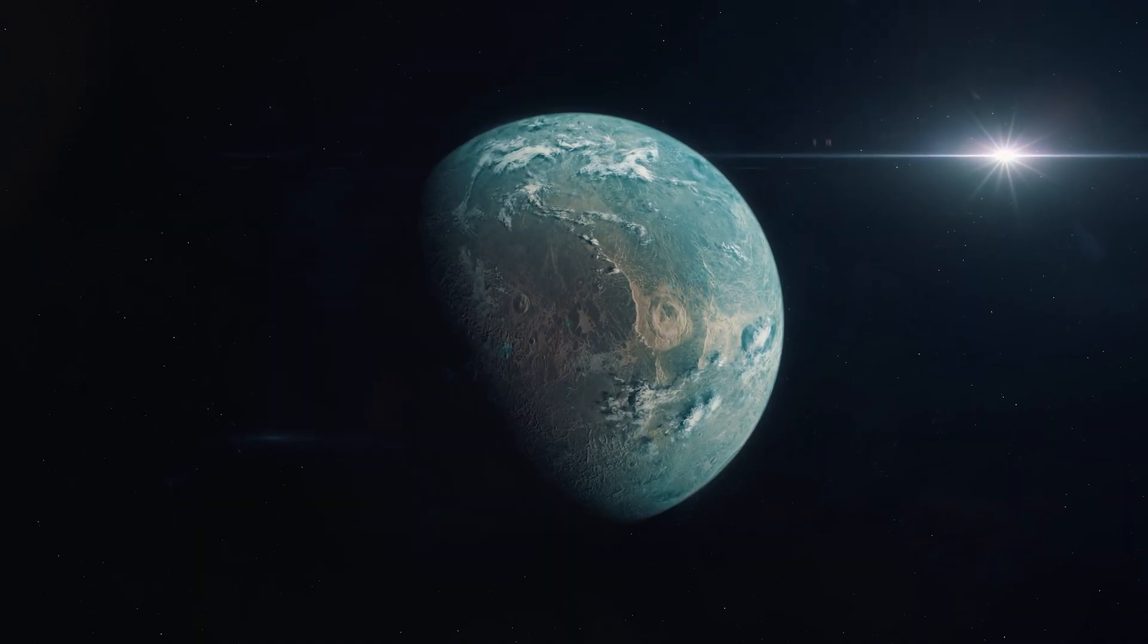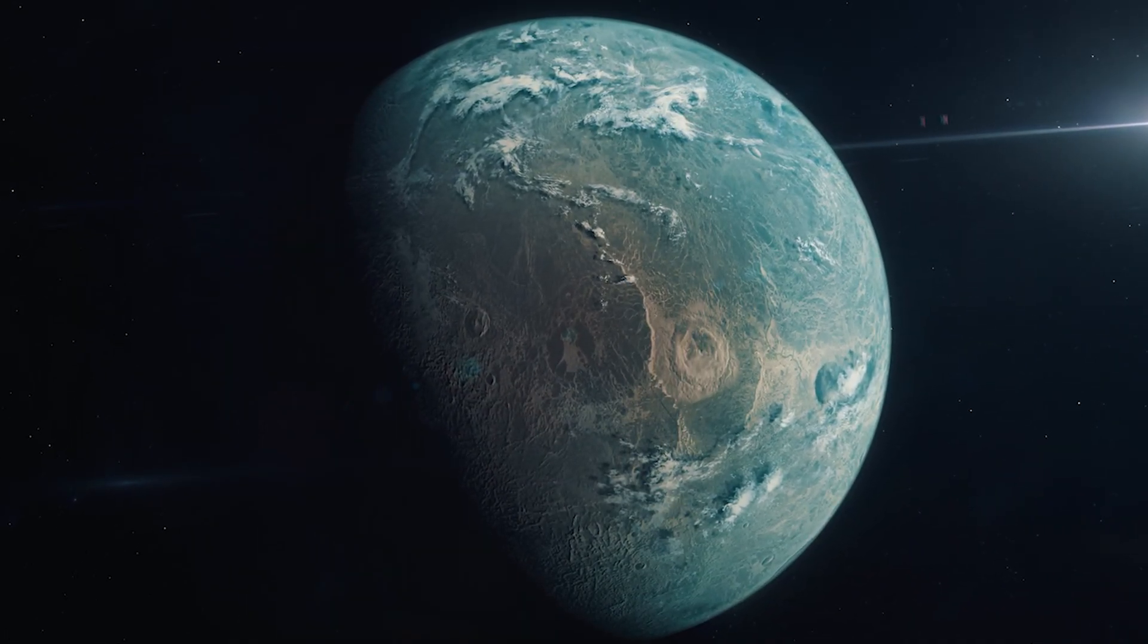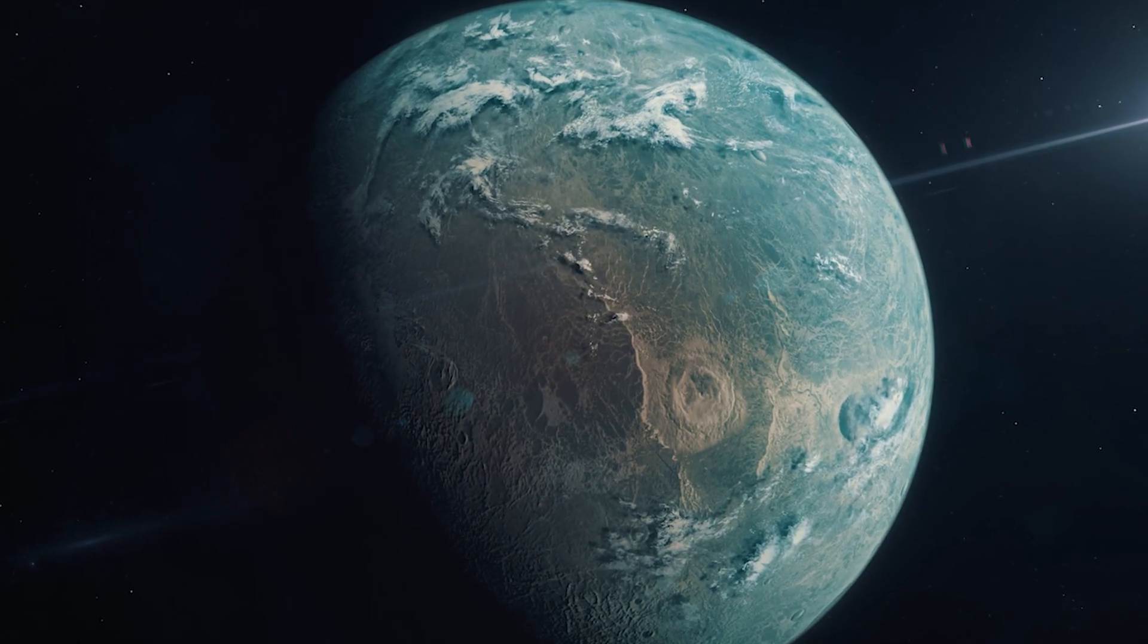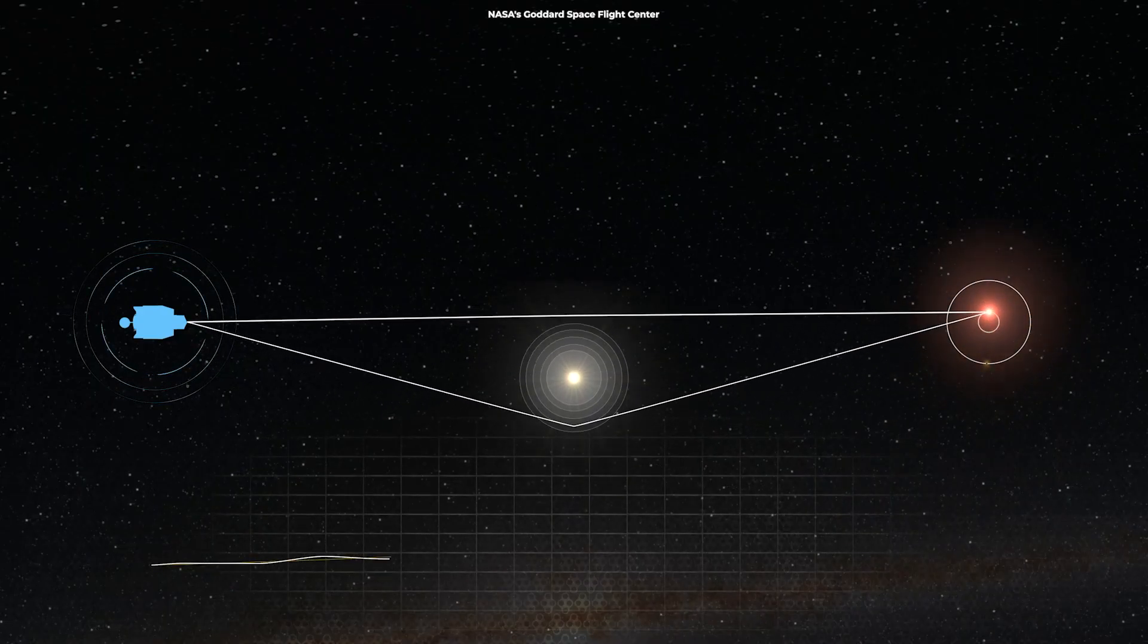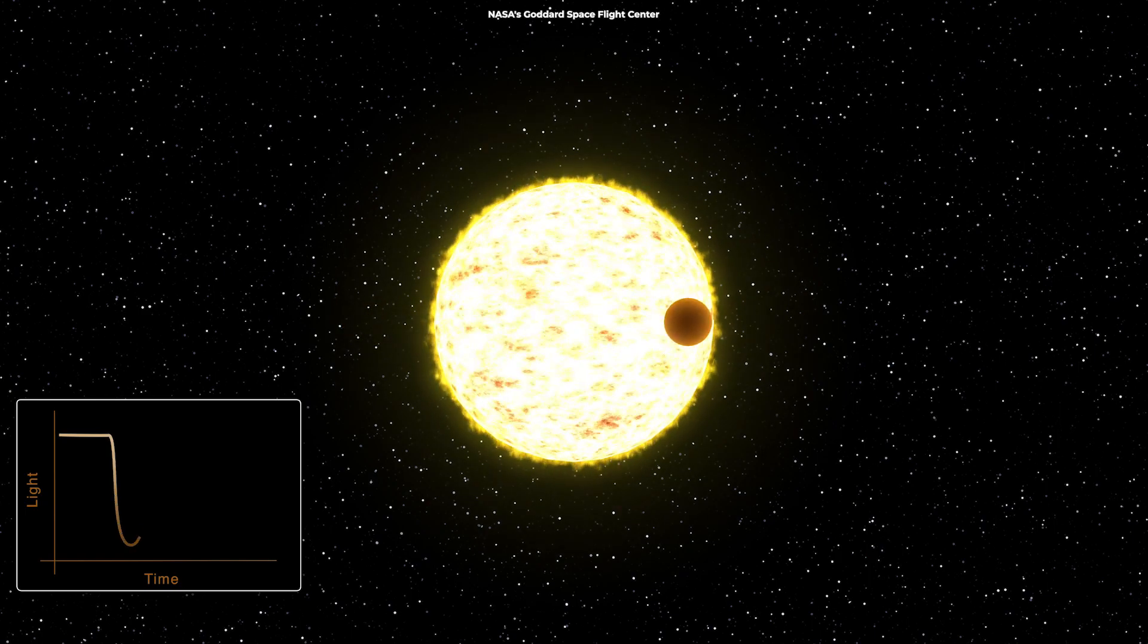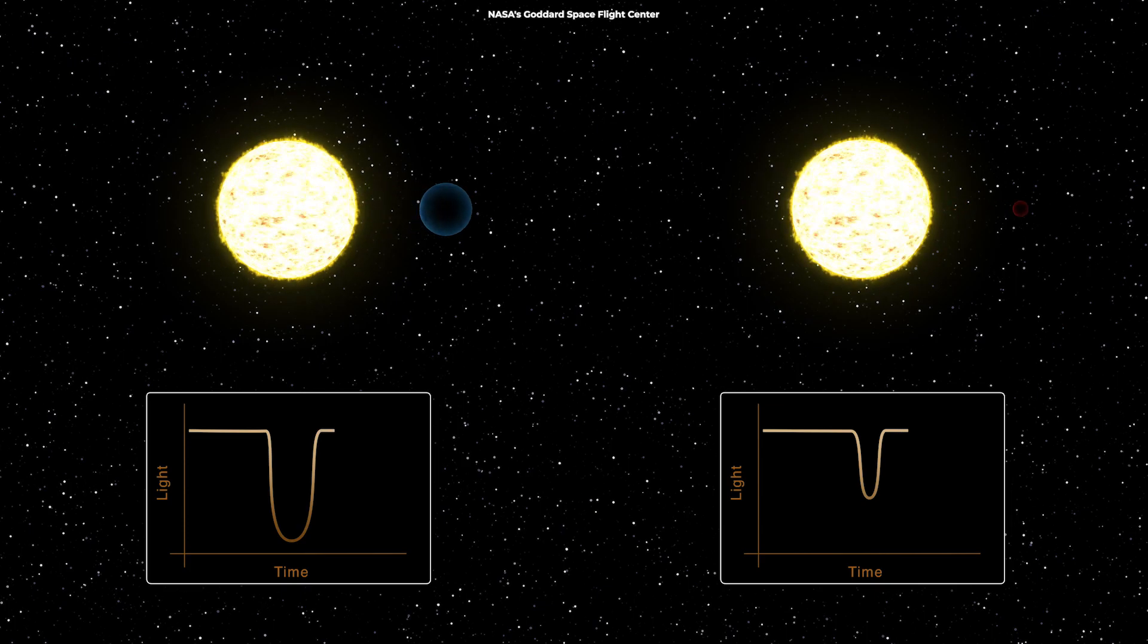Another reason super-Earths are ideal targets in the search for life is that they're much easier to detect and study than Earth-sized planets. There are two methods astronomers use to detect exoplanets. One looks for the gravitational effect of a planet on its parent star, and the other looks for the brief dimming of a star's light as the planet passes in front of it. Both of these detection methods are easier with a bigger planet.